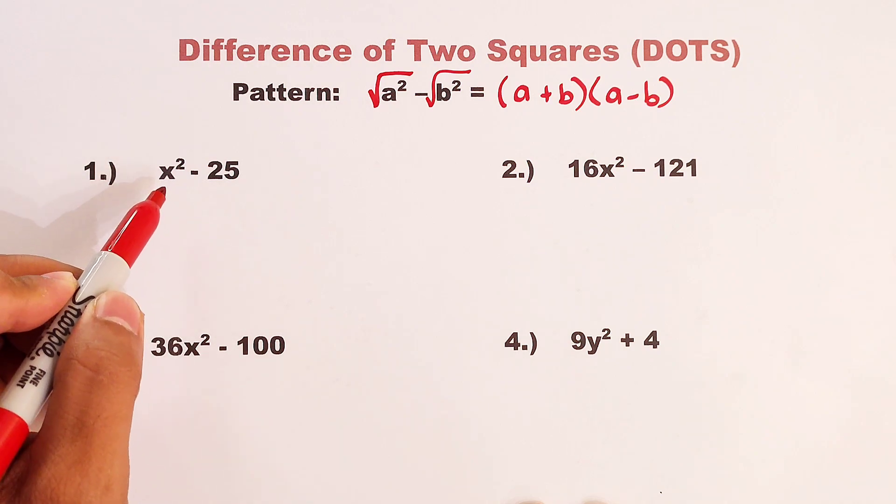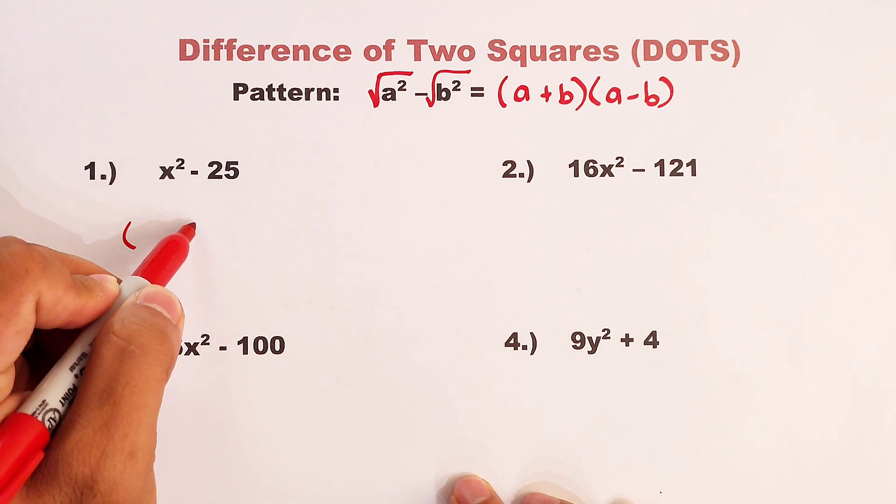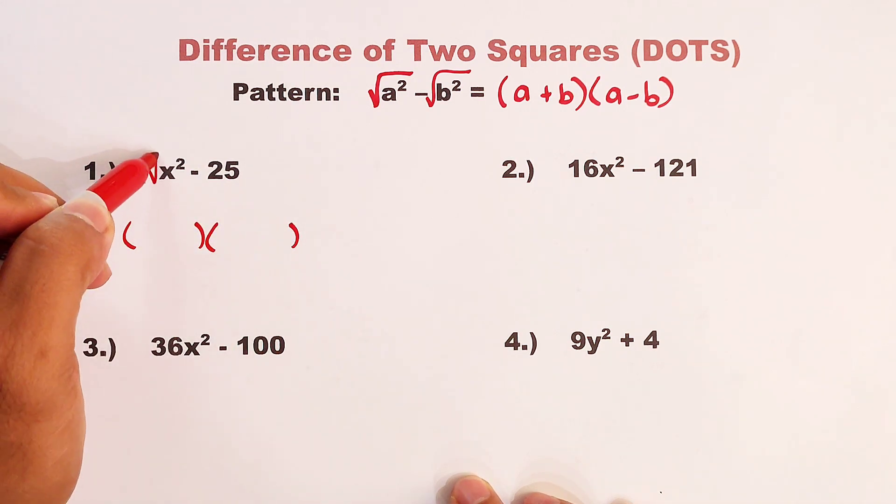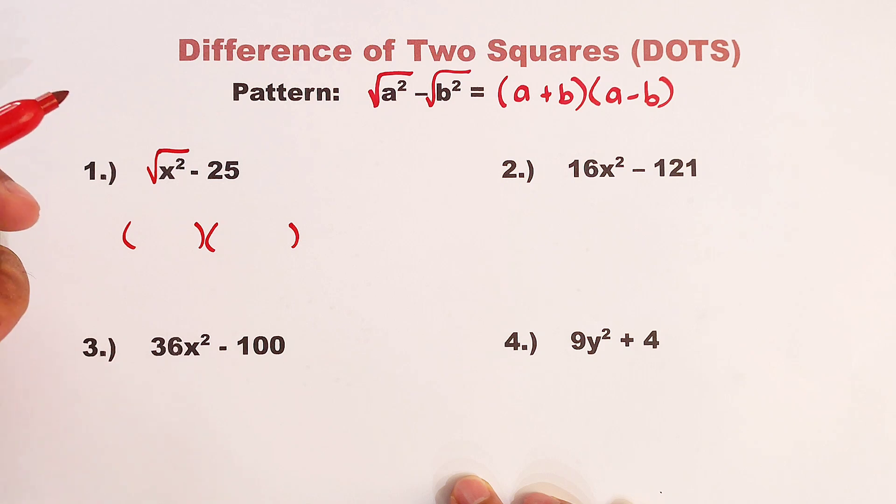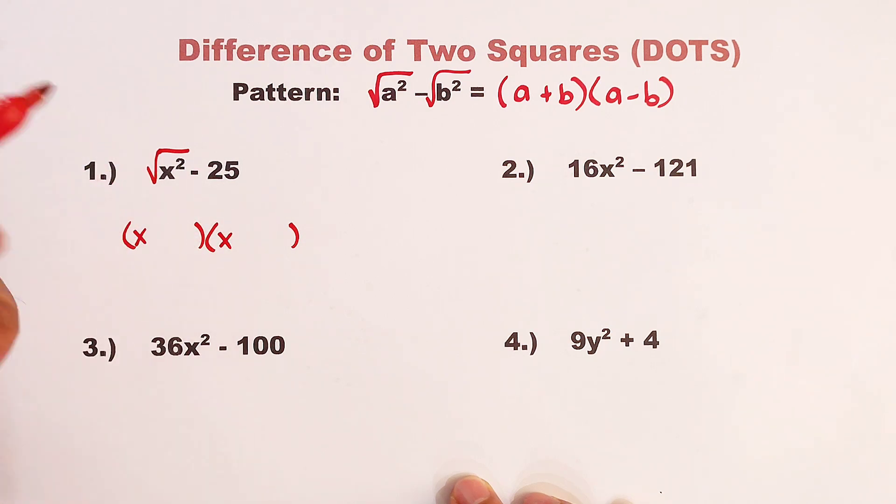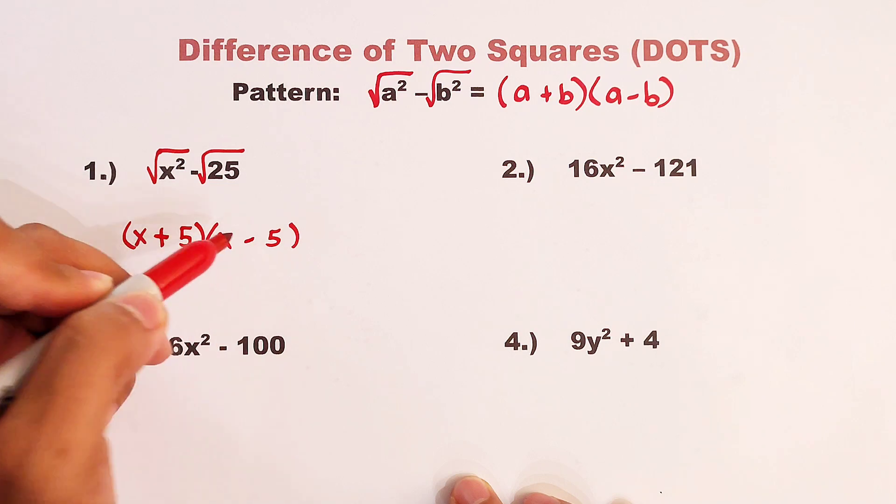Since this one is qualified, let us use this pattern. Let us prepare first two sets of parentheses. The square root of x squared is x. So this will become x and x. Now, as for the square root of 25, definitely that is 5 and 5. So we can put here plus and minus.